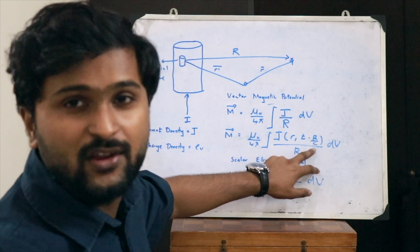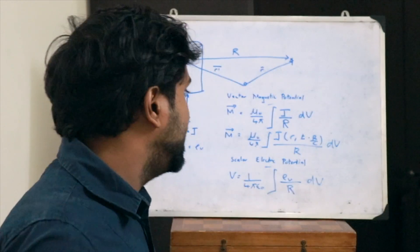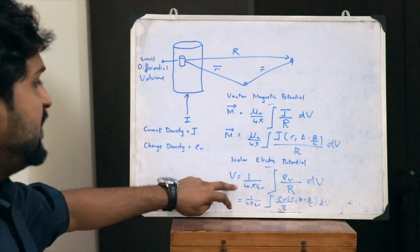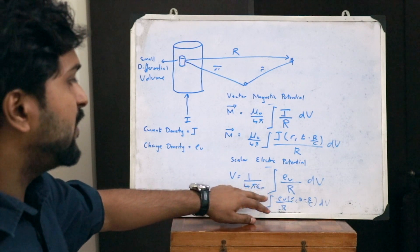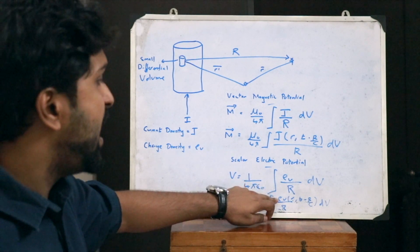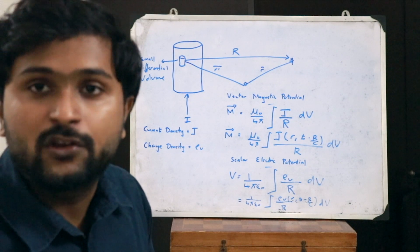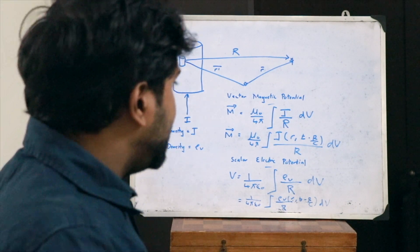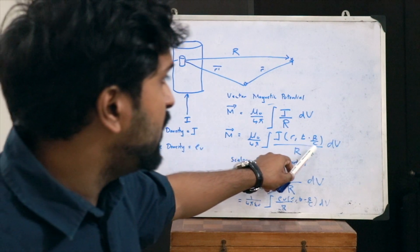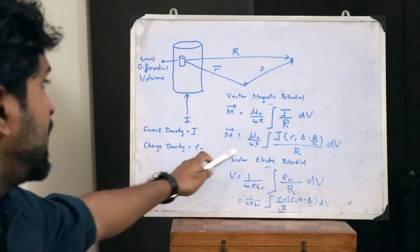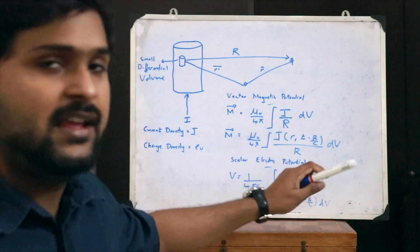Similarly, for the scalar electric potential, the expression is written as V = 1/4πε₀ times the integral of the volume charge density ρV as a function of distance and time, divided by R, integrated with respect to volume. In these equations, there is a particular delay by a factor of R/c. Thus, these potentials are found to be delayed or retarded by a factor of R/c.